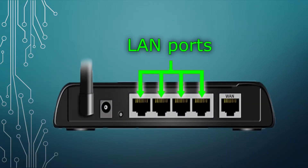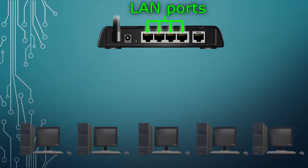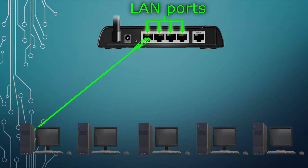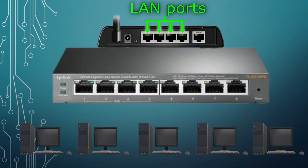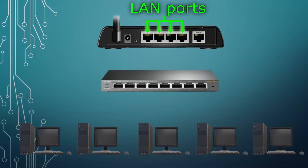Now, a router typically only has four LAN ports available, so what if you have a LAN party of five people where everyone also needs to connect via a network cable? That means the fifth person won't have LAN access, right? Then a common solution is to use what is called a network switch, which is essentially a box consisting of many LAN ports.